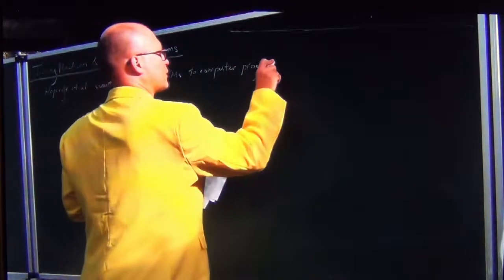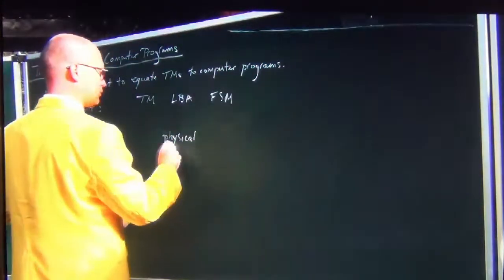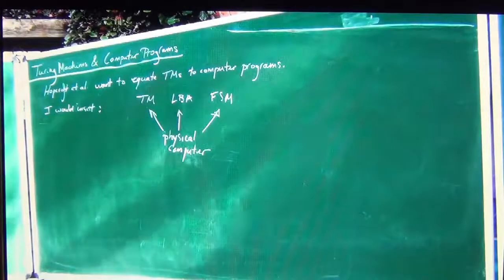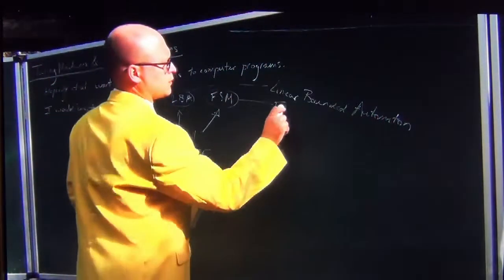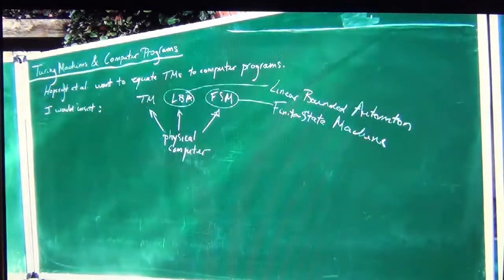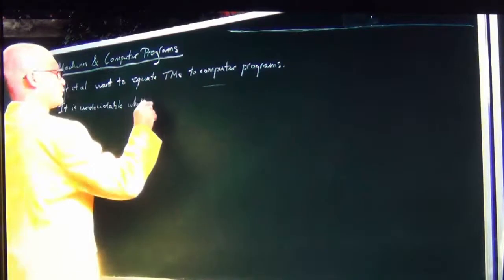Here's the second subsection of Hopcroft et al., where they talk about Turing machines and computer programs. The authors want to equate Turing machines to computer programs. I would insist, on the other hand, that Turing machines, linear bounded automata, finite state machines, and so on can all serve as models of a physical computer running a computer program. So I would not equate the Turing machine model with a physical computer — I would just view it as a possible model of a physical computer.